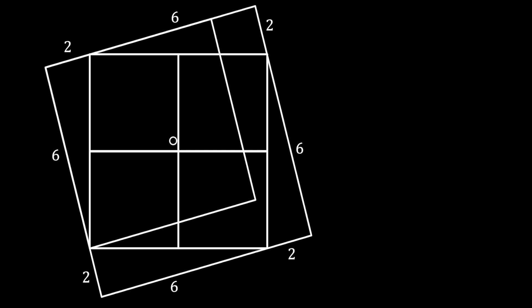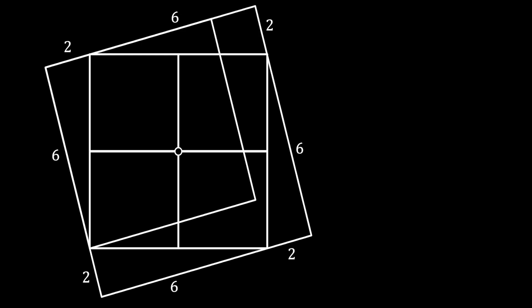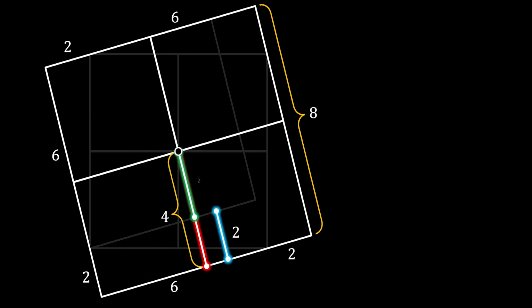The center of the inner square coincides with the center of the bigger tilted square by symmetry. We draw a perpendicular bisector of the big tilted square, dividing it into four separate squares. Since the side is 8, the red line equals half of 8, which is 4. The blue segment on the bottom left has length 2, so the green line — the remaining segment of the red line — has length 2.